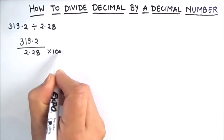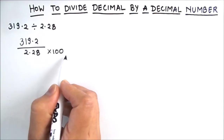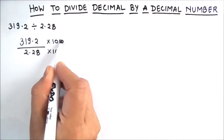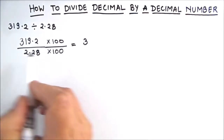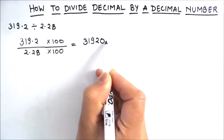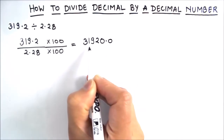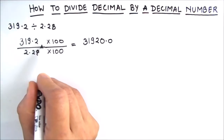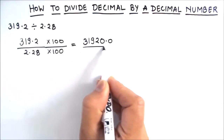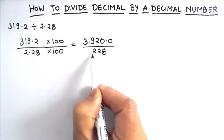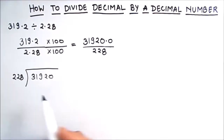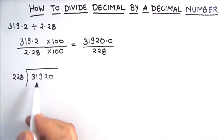Since we are multiplying the denominator by 100, we also need to multiply the numerator by 100. The numerator 319.2 becomes 31920 — the decimal moves two places to the right. So now we have 31920 in the numerator and 228 in the denominator, and we can divide the two numbers easily.